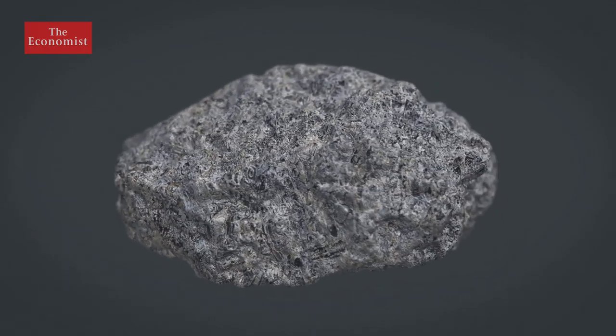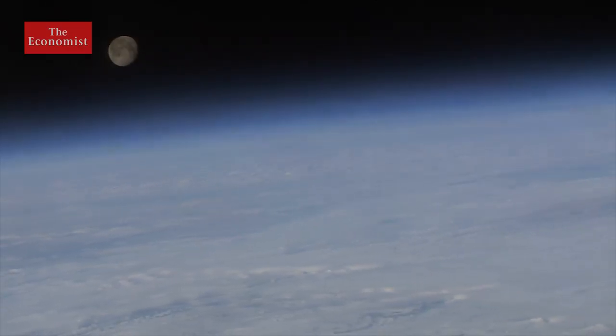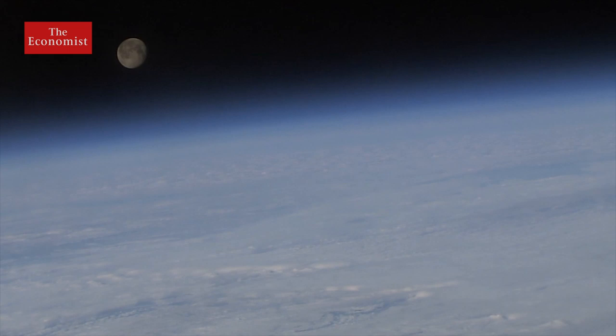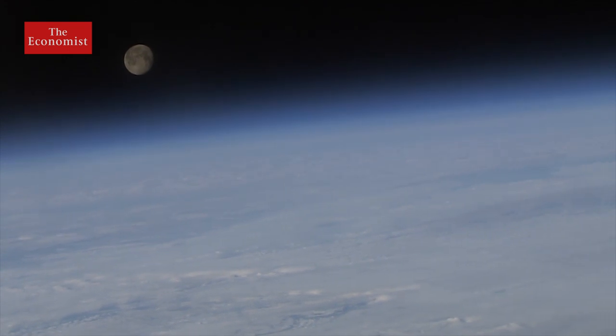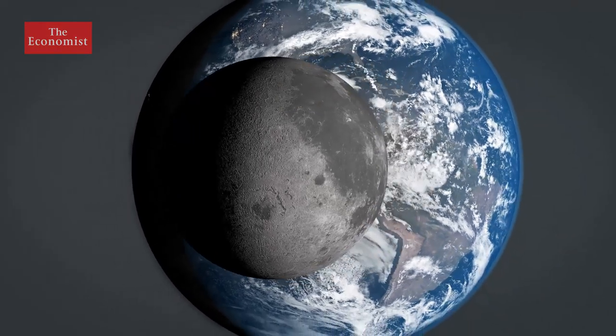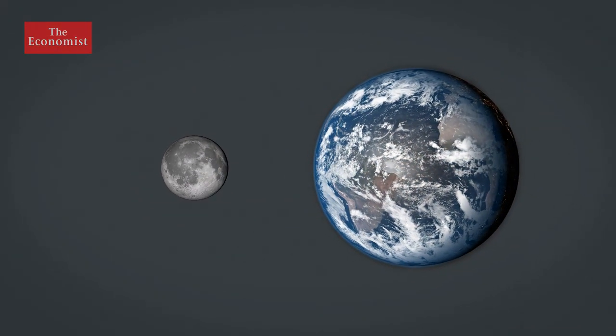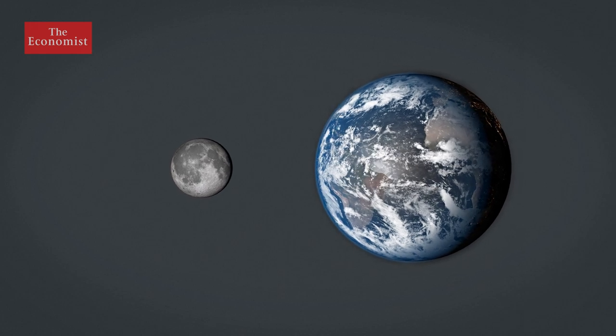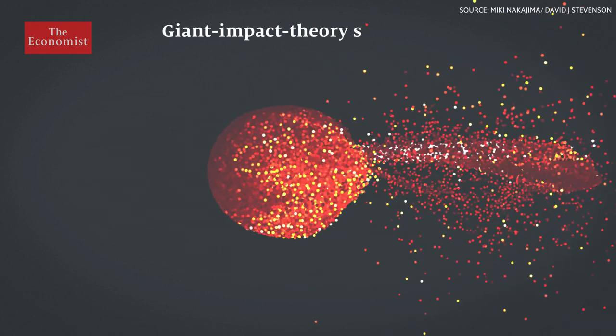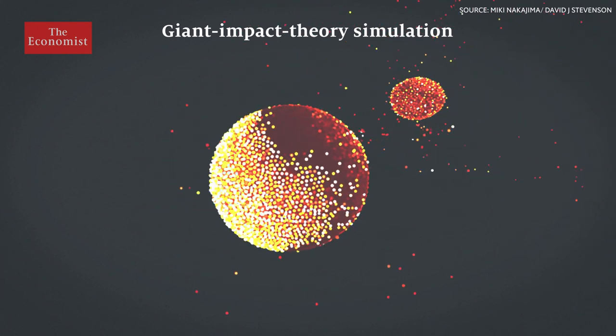But the moon rocks also revealed the biggest impact was the one that created the moon itself. Scientists found the moon rocks to be surprisingly, perhaps disappointingly, like those on Earth. It turns out that the Earth and the moon are chemically very similar indeed, as if twins. It was this revelation that led to a game-changing idea, the giant impact theory.